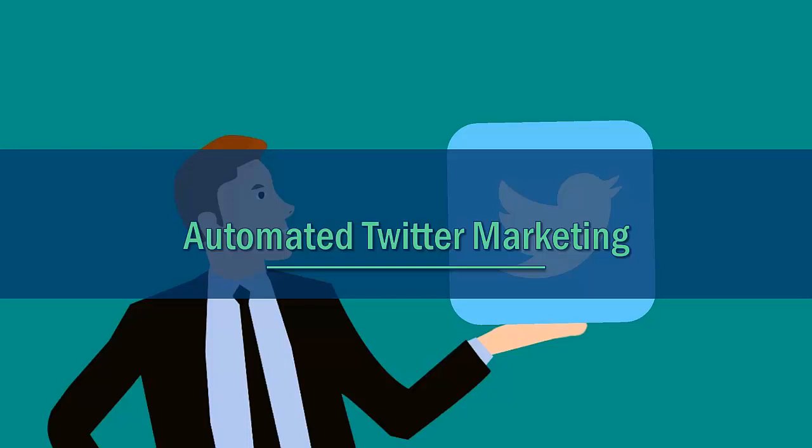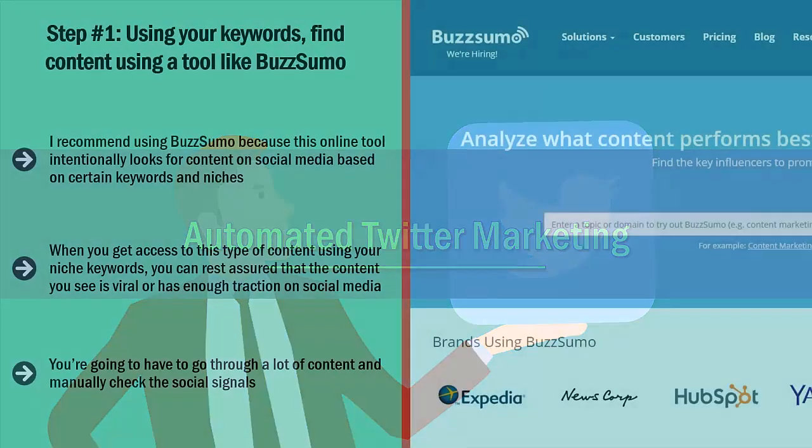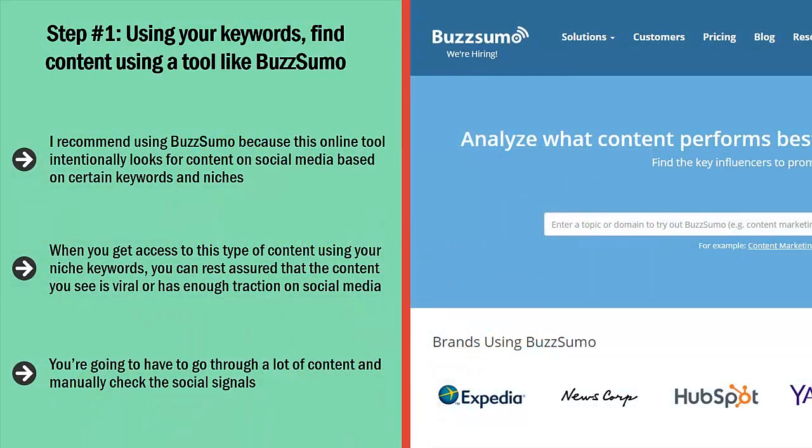Automated Twitter Marketing. Follow the step-by-step directions below to set up your own automated Twitter marketing campaign. Step number one: using your keywords, find content using a tool like BuzzSumo. I recommend using BuzzSumo because this online tool intentionally looks for content on social media based on certain keywords and niches.